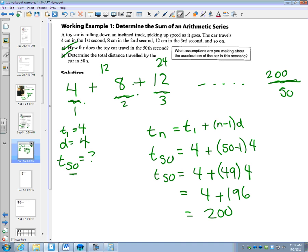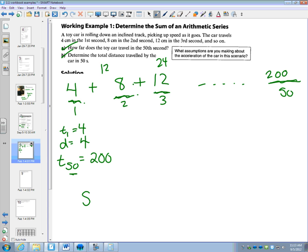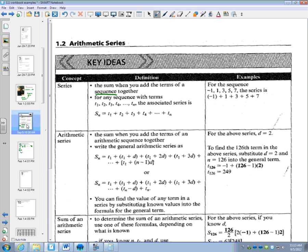So what I know is this is 200 right here. So now what I'm doing is I want to find the sum, S of 50. And remember that it depends what information we use, which formula. So there's two formulas.